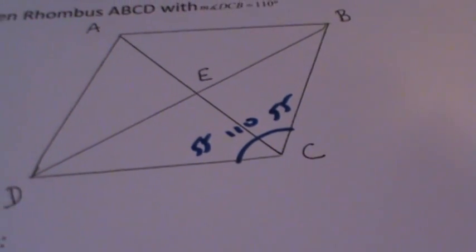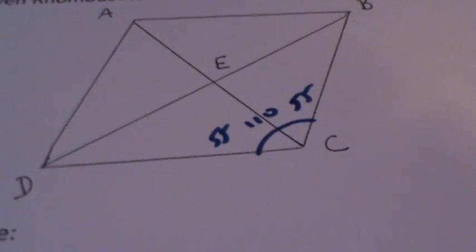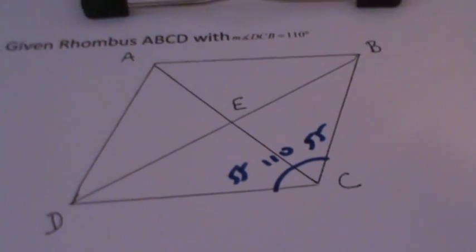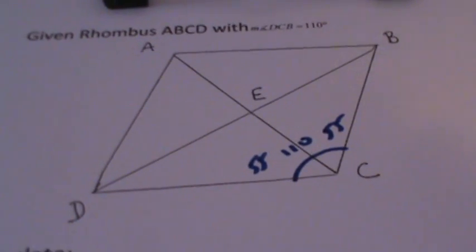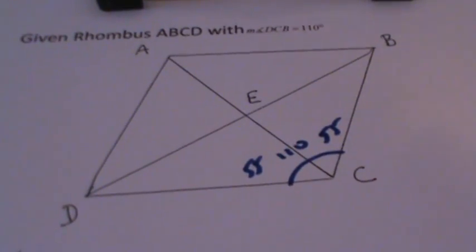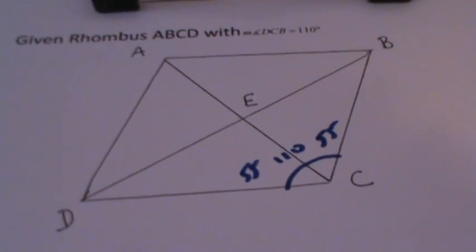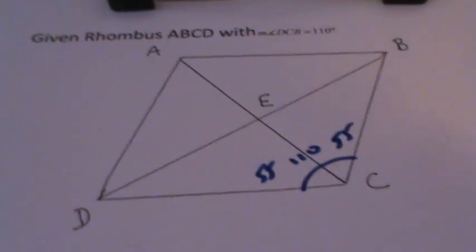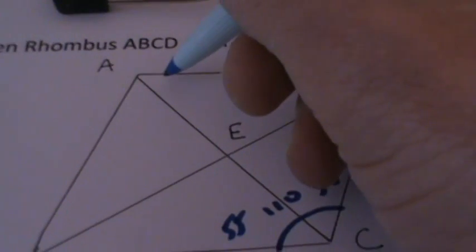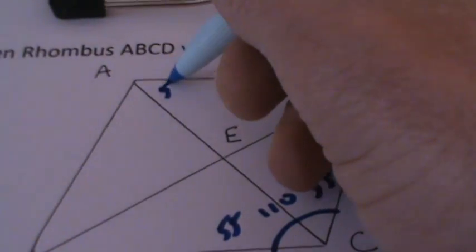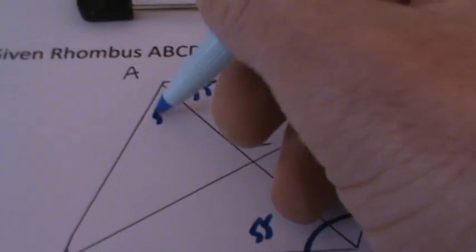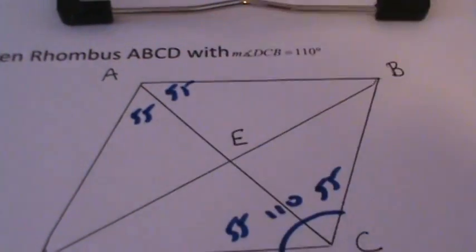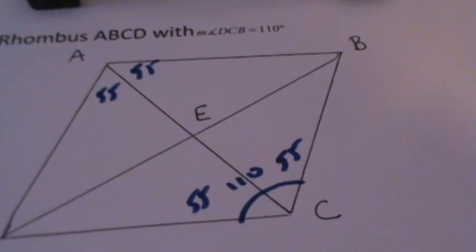Another important property of a rhombus is that the angles across from each other are congruent. So we know the measure of the upper angles here are also 55 degrees each.